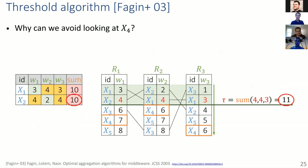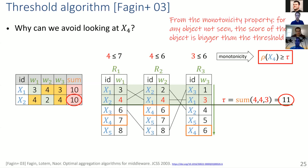We now have the guarantee that we have seen the top two tuples and don't need to access more. Why? Monotonicity is the key ingredient. Any unseen object — say X4 — must have values in each attribute that are greater than or equal to the individual values we last saw. By the monotonicity property, the aggregate of anything below the current scan position must be bigger than the threshold, which in turn is bigger than all objects we have seen. Therefore, we can stop.